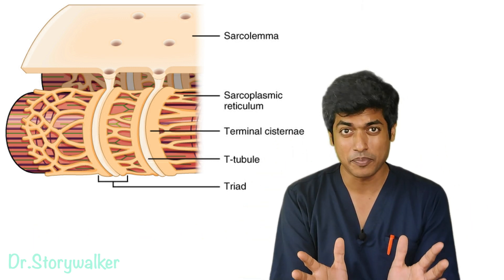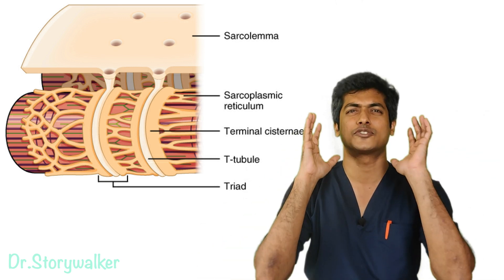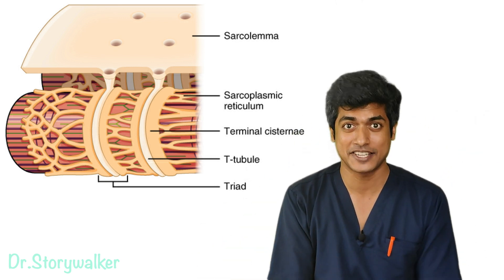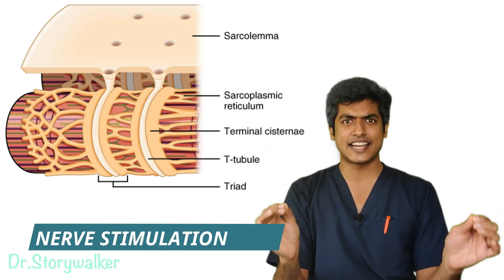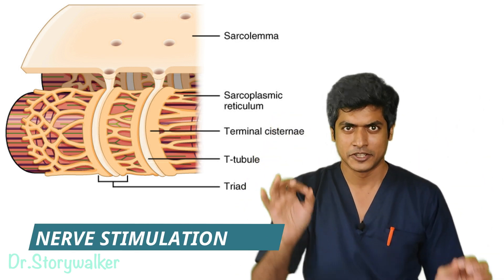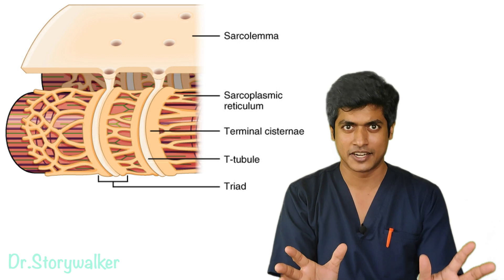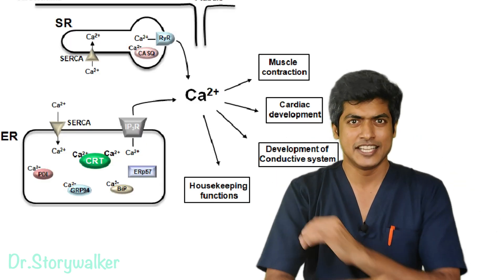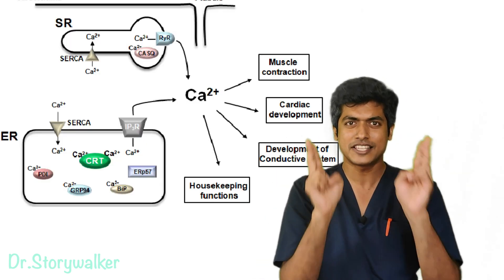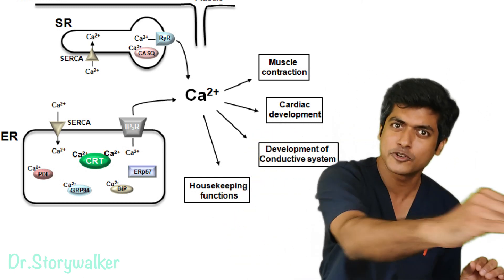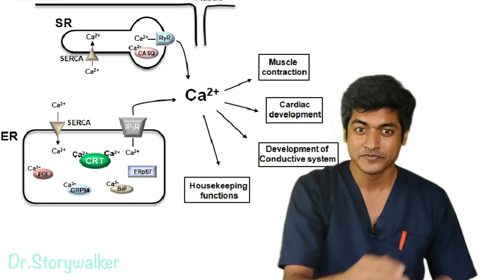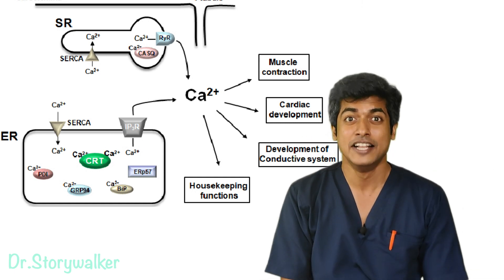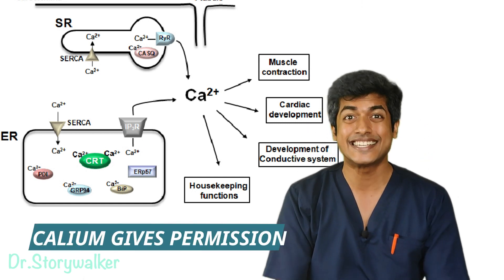These tubules are connected to a storage unit called the terminal system. This terminal system is storing enormous amounts of calcium ions. When the muscle is excited by nerve stimulation, the terminal system releases and shoots all this calcium out through the tubular network into every aspect of each myofibril.